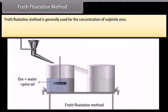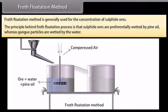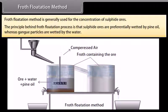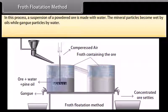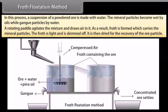Froth flotation method. This method is generally used for the concentration of sulphide ores. The principle behind froth flotation process is that sulphide ores are preferentially wetted by pine oil whereas gang particles are wetted by water. In this process, a suspension of a powdered ore is made with water. Collectors like pine oil, fatty acids and xanthates are added to it. Froth stabilizers like cresols and aniline stabilize the froth. The mineral particles become wet by oils while gang particles by water. A rotating paddle agitates the mixture and draws air in it. As a result, froth is formed which carries the mineral particles. The froth is light and is skimmed off. It is then dried for the recovery of the ore particles.